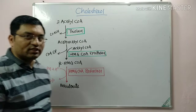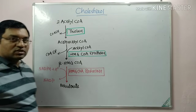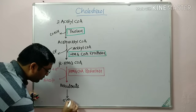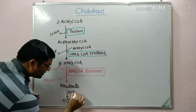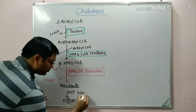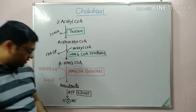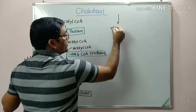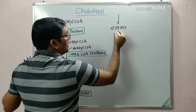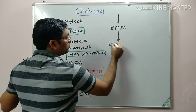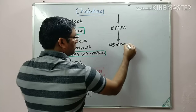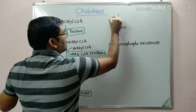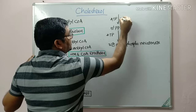This is the second step — synthesis of mevalonate. Now this mevalonate undergoes three successive kinase reactions, that is phosphorylation. It is converted into 5-phosphomevalonate, which requires ATP, catalyzed by kinase. Then it is converted into 5-pyrophosphomevalonate, and this 5-pyrophosphomevalonate is converted into 3-phospho-5-pyrophosphomevalonate. ATP is required and it is catalyzed by kinase.